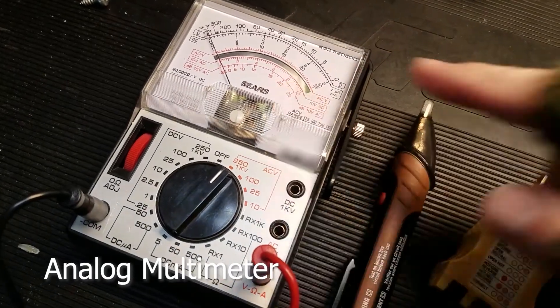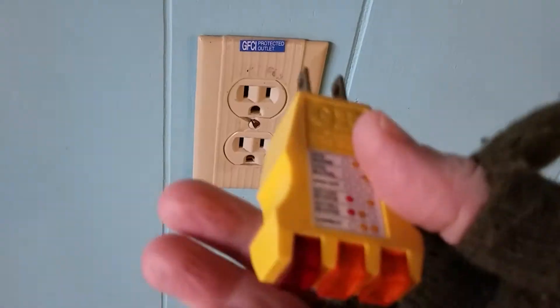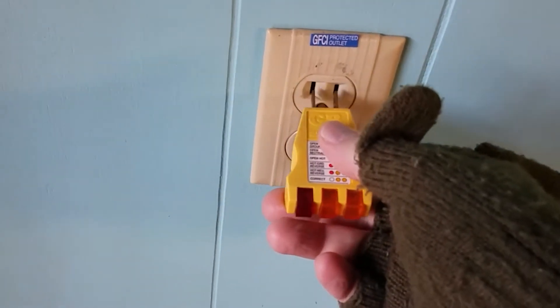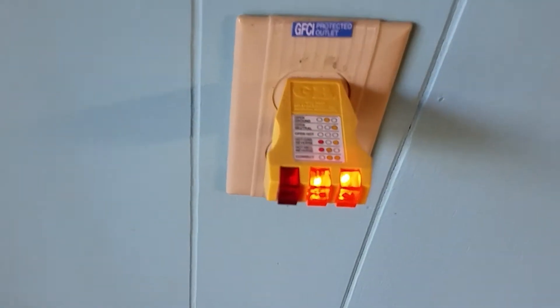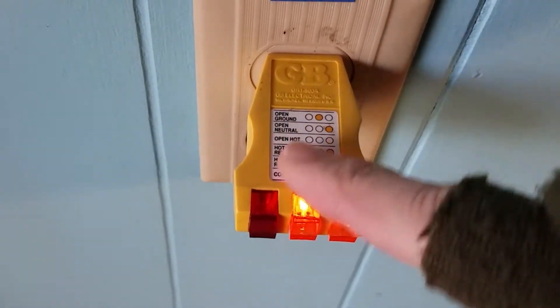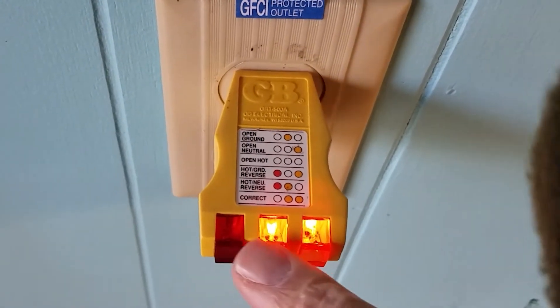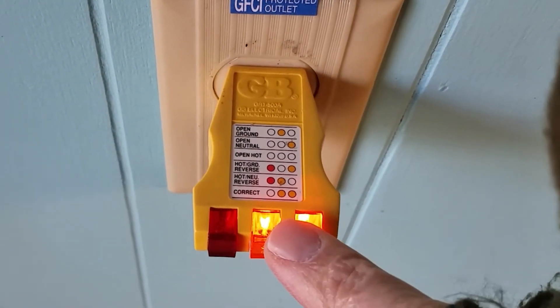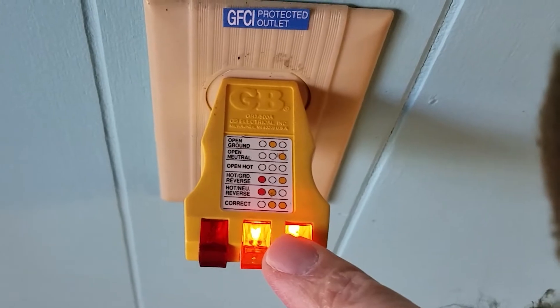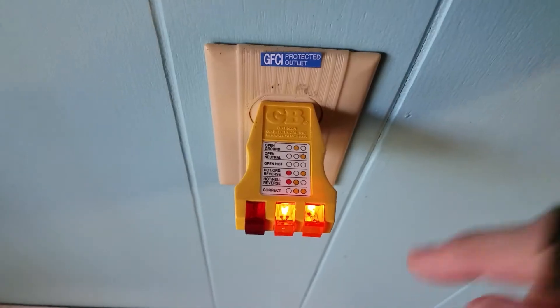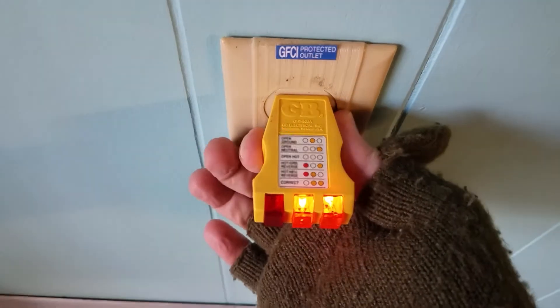These plug testers are great because they can tell you all sorts of information just by simply plugging it into the outlet and reading what lamps come on. In this case it says that everything is correct. But what if I turned off the circuit? Then the lights would all go out right?